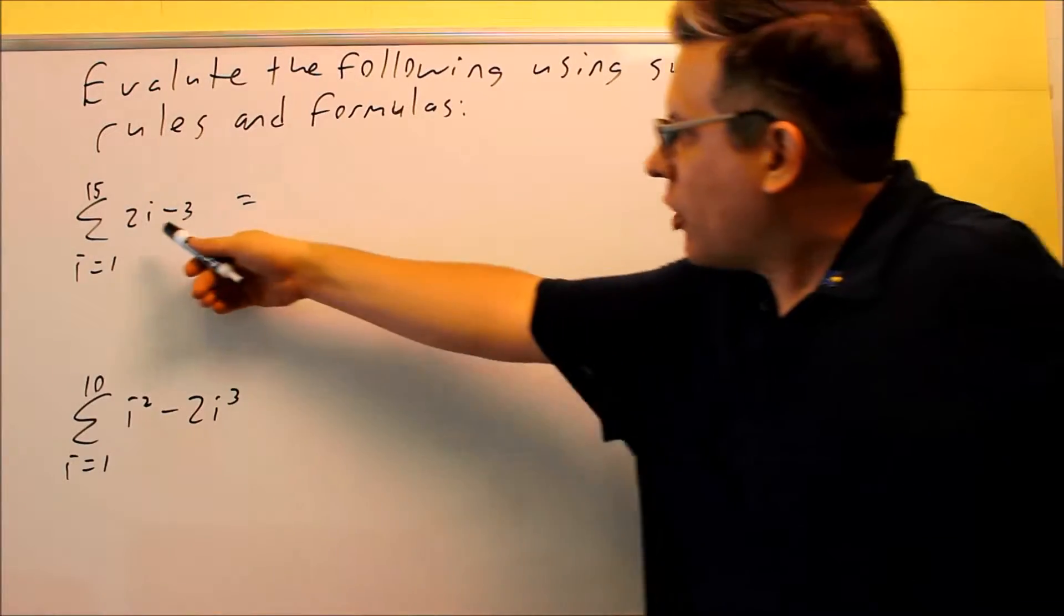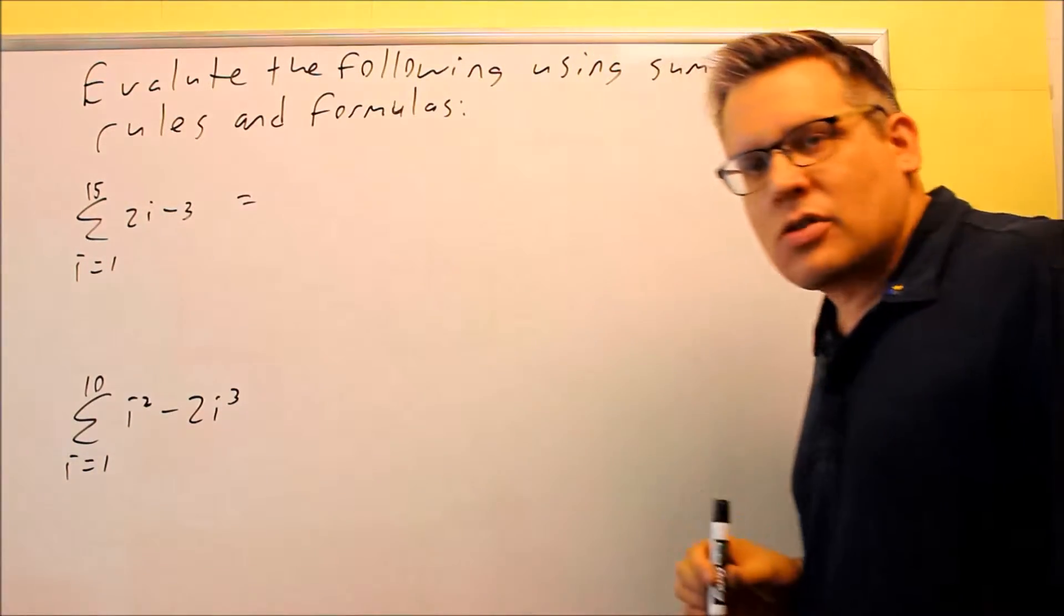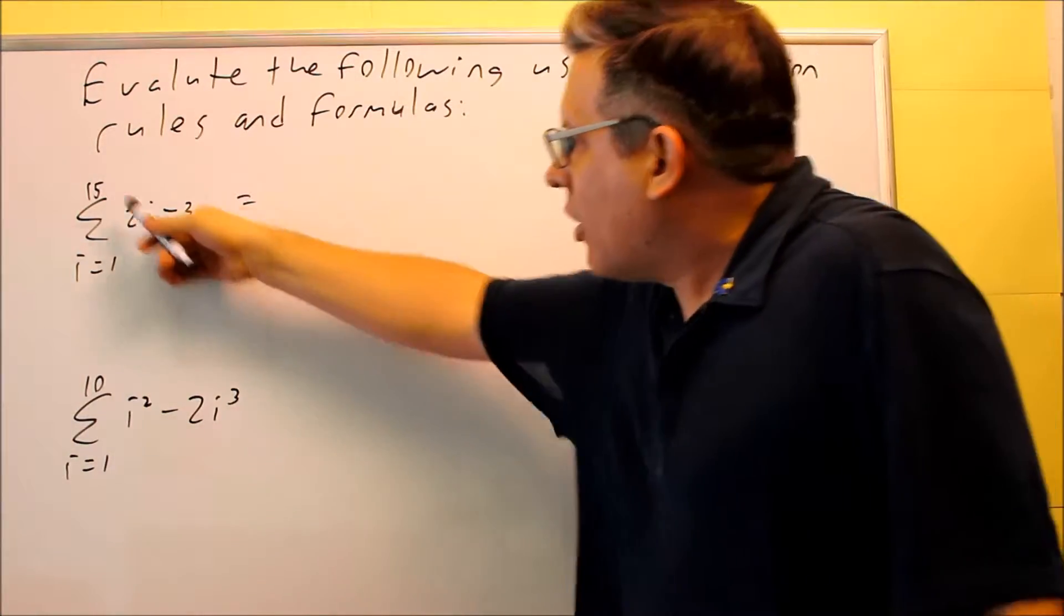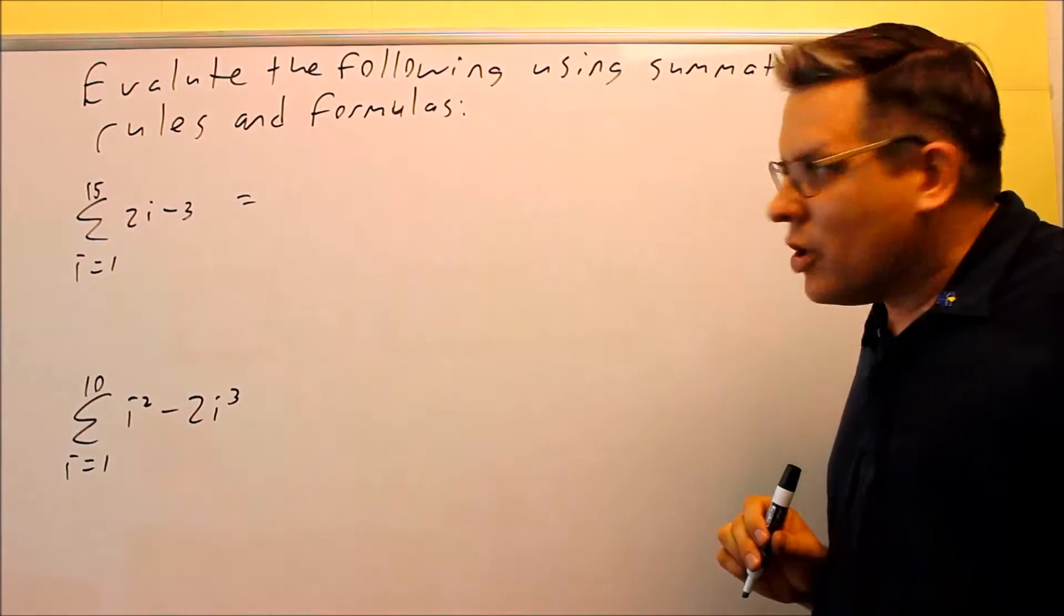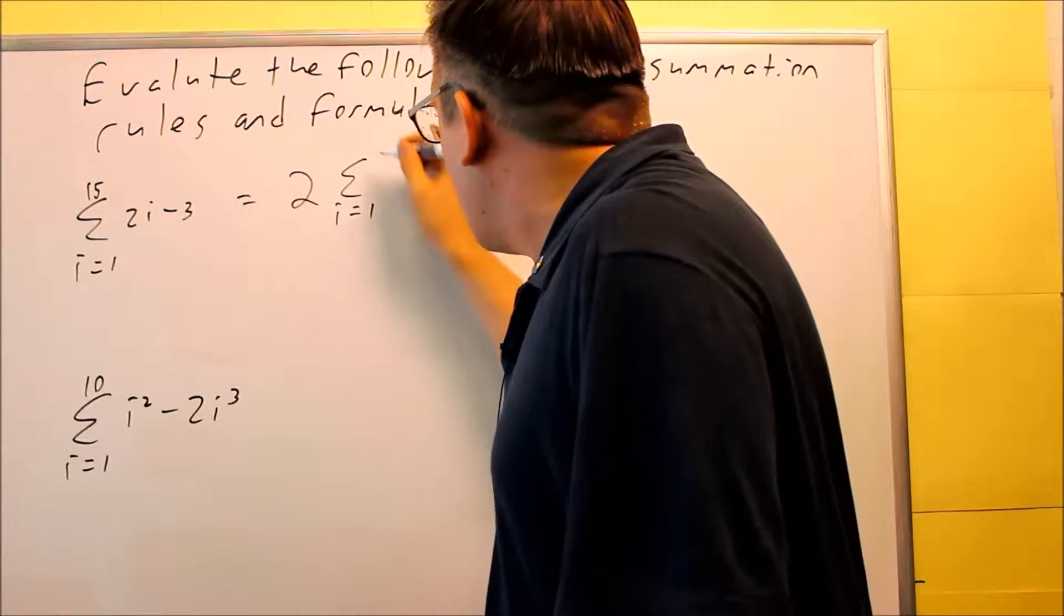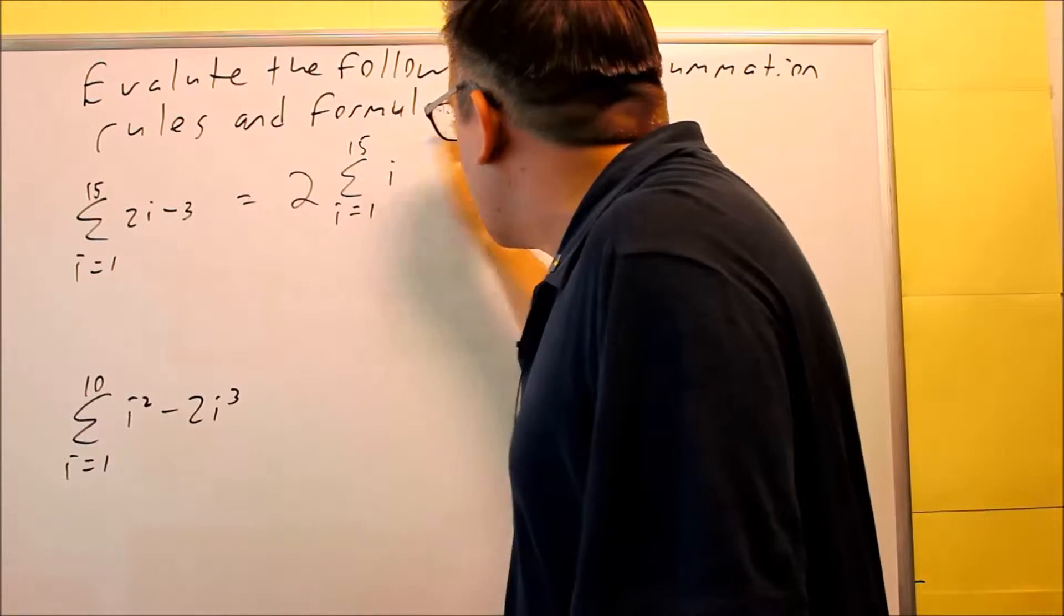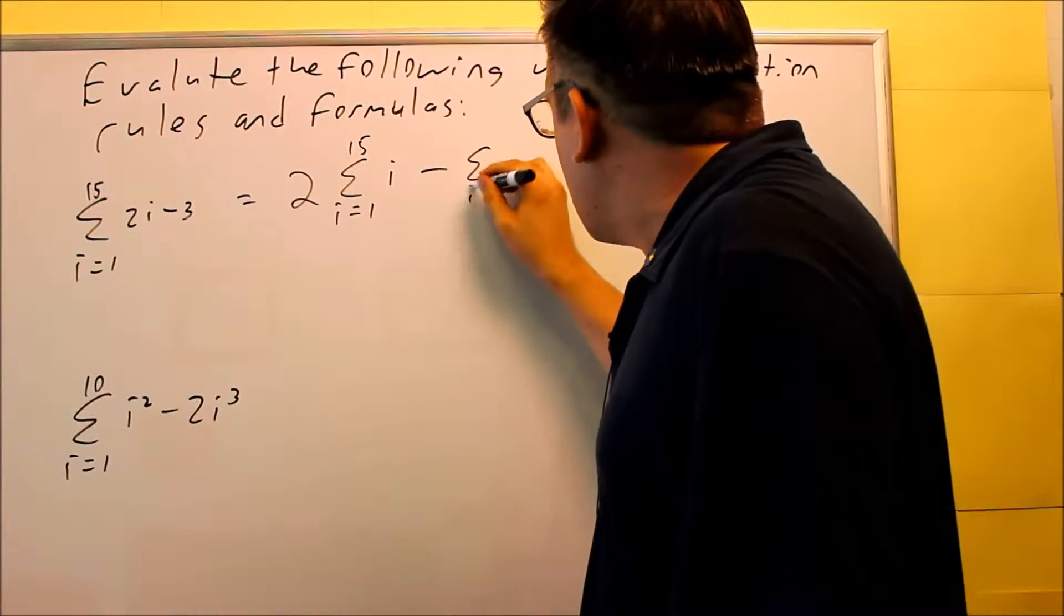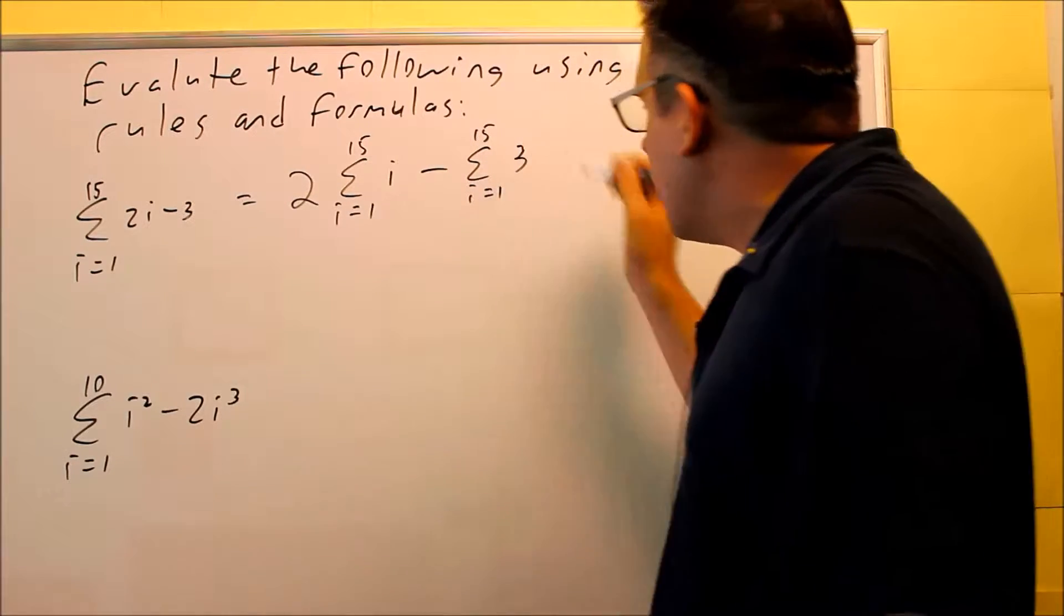So for this one, what I'm going to do first is split this summation up into two different ones. Because there's a 2 in front of the i, I can also move that outside the summation notation. So this is what it looks like: I have 2 times summation i equals 1 to 15 of just i, and then I'm going to do minus summation i equals 1 to 15 of 3.